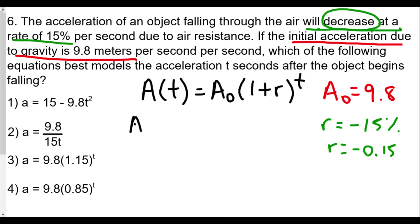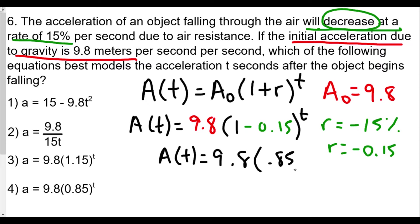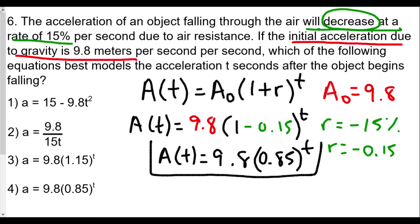Plugging these into our formula: a(t) = 9.8 × (1 + (−0.15))^t = 9.8 × (1 − 0.15)^t = 9.8 × 0.85^t. This will be the model for acceleration, and it matches choice number 4.